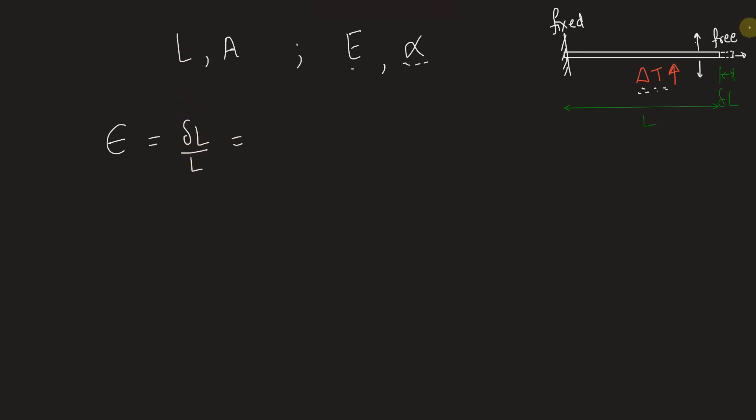This change in length of this rod can be expressed in terms of coefficient of expansion and change in the temperature delta T. So it is given as alpha into delta T and this change happens per unit length. So we will have to multiply length to it in order to get the complete change happening divided by length again, which is equal to we get the strain in the material as alpha into delta T. So this is clear.